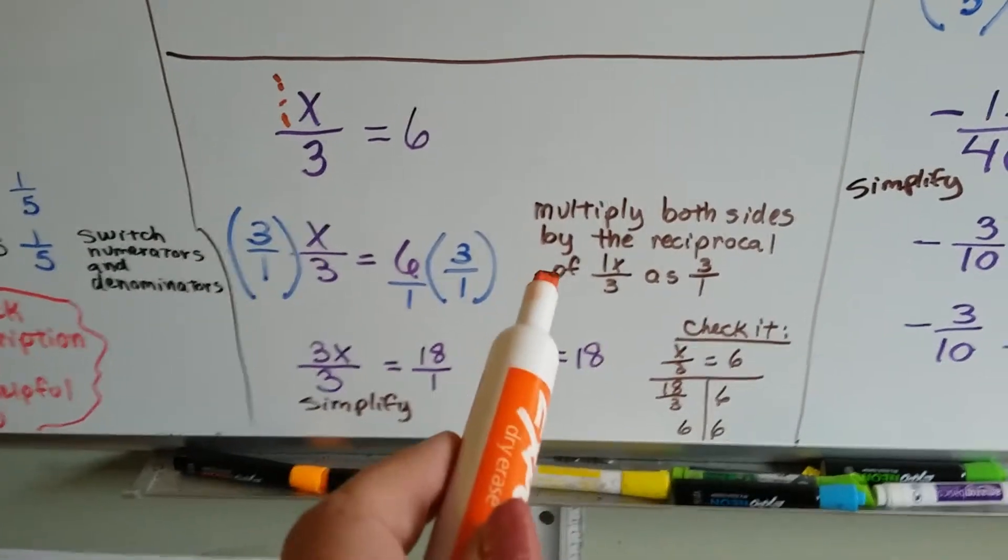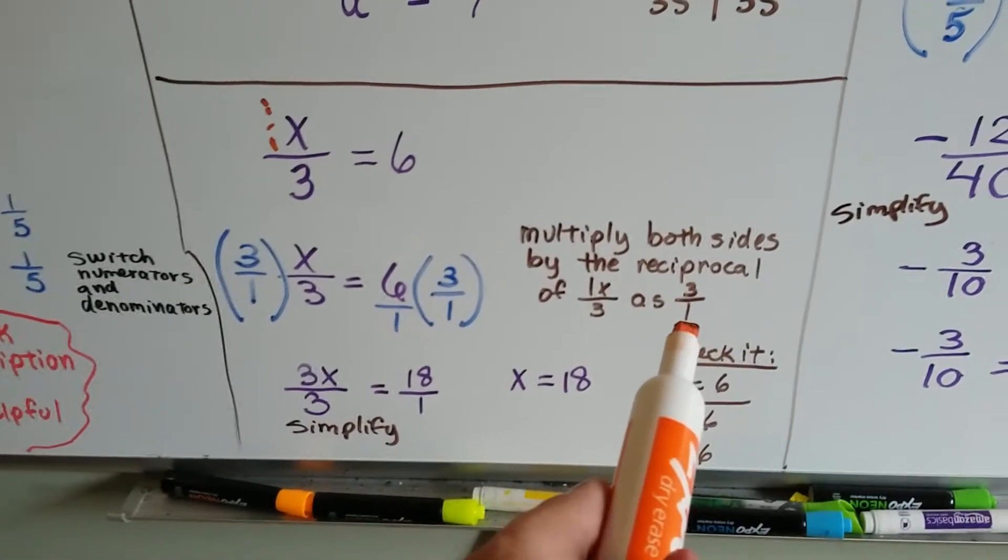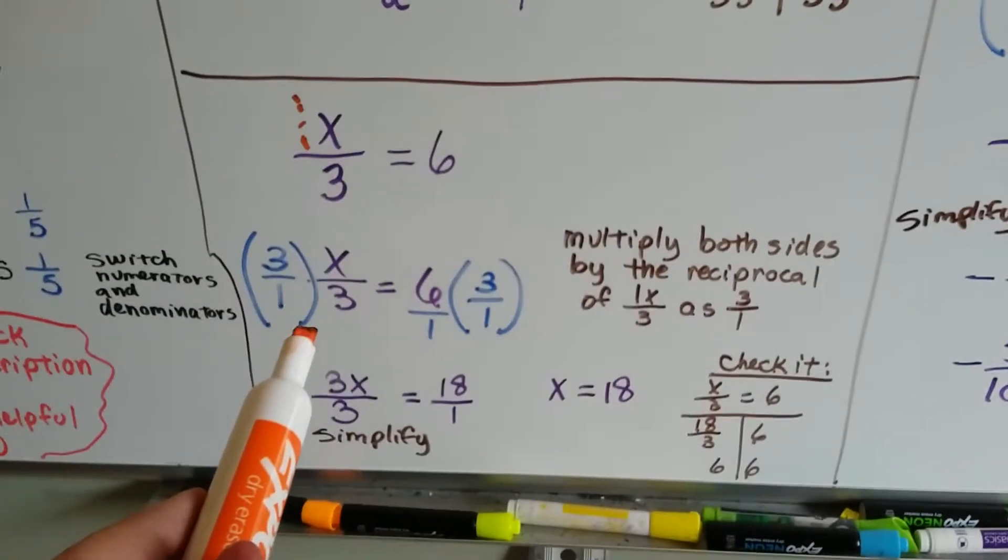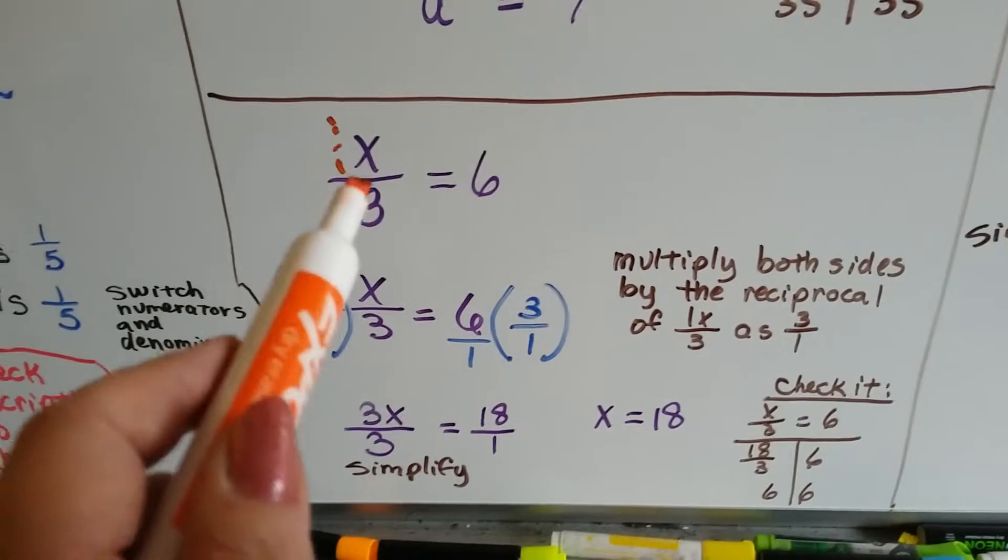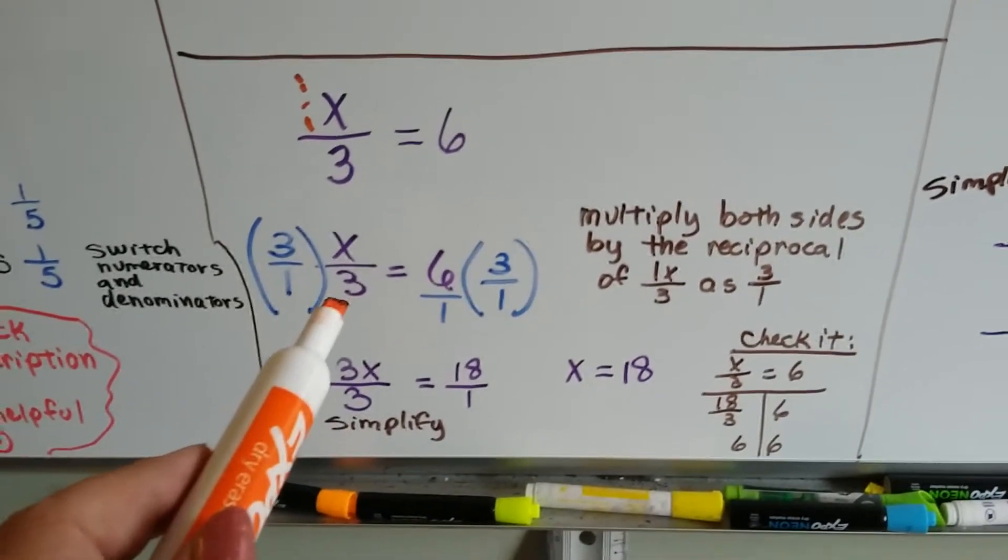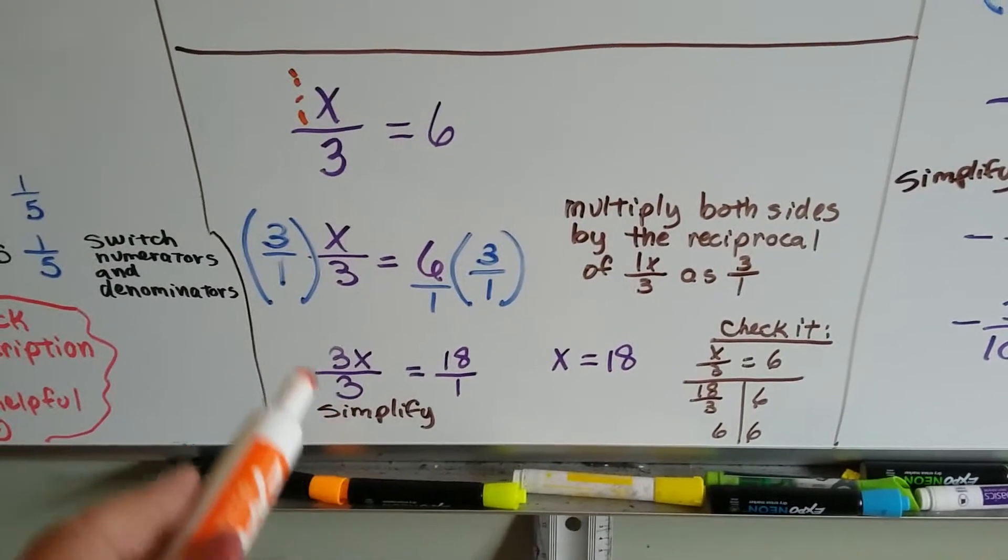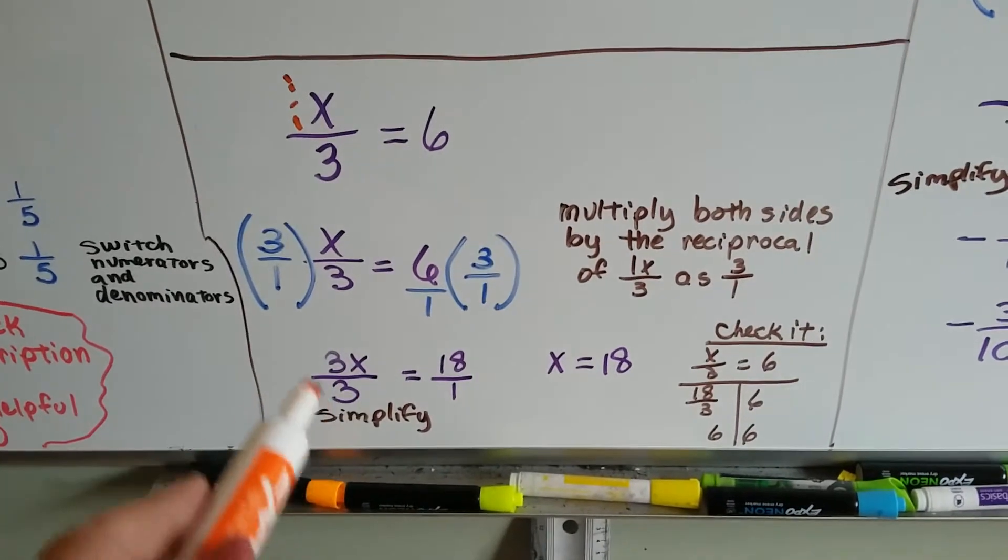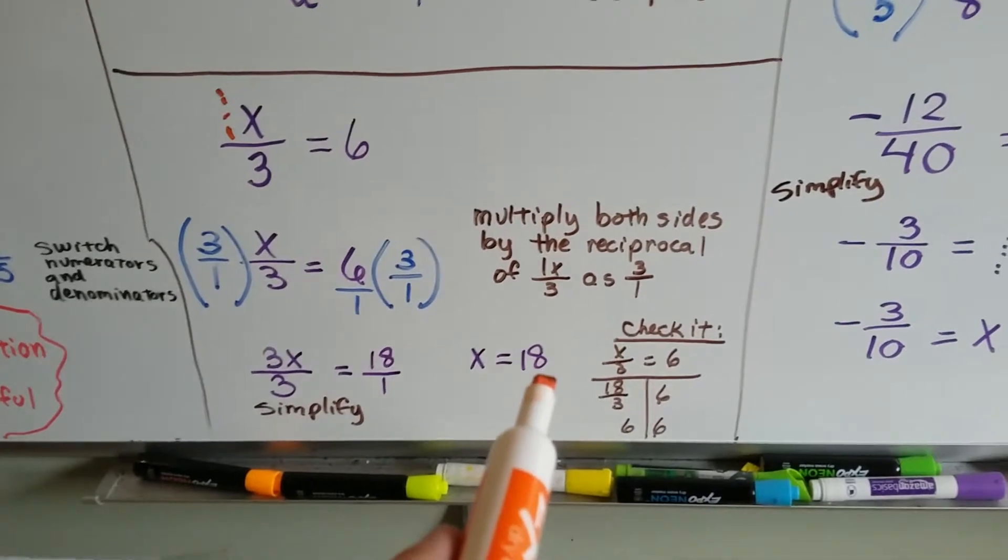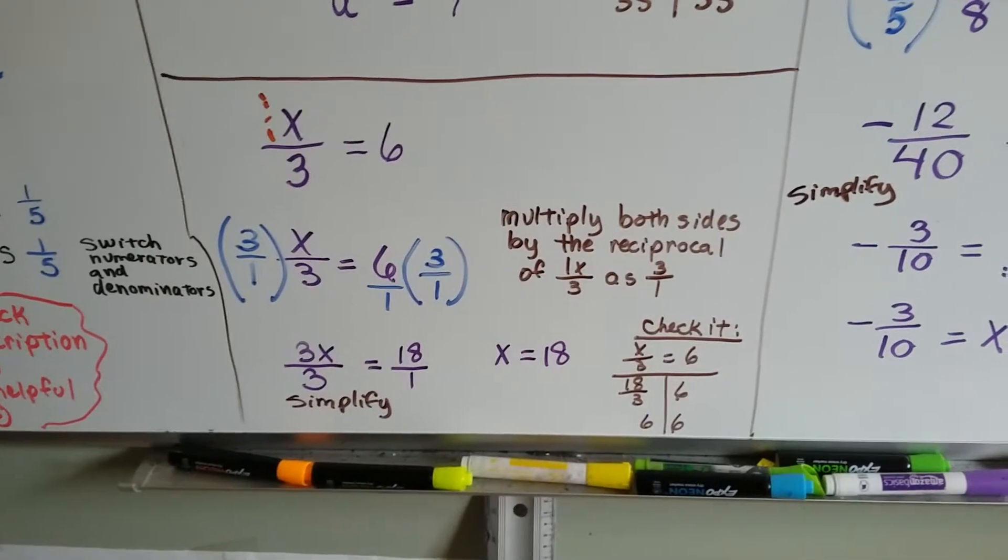What we do is we multiply both sides by the reciprocal of 1x over 3 as just 3 over 1. We drop that x off. Just put the 1 there. That's the tricky part. Just remember to drop the x off and flip it over as 3 over 1. Now, when we multiply, we get 3x over 3 equals 18 over 1. And when we simplify it, this 3 over 3 becomes our friend, the invisible 1. We end up with just an x equals 18. We can check it by plugging 18 where the x was. 18 over 3 does equal 6. So we know we did it correctly.